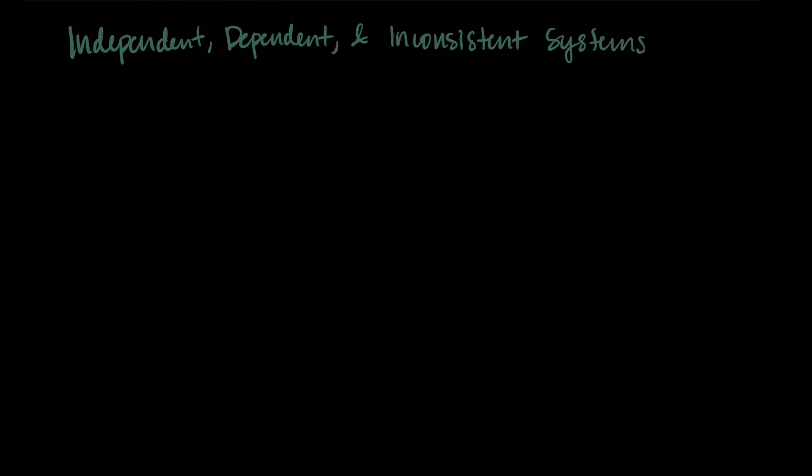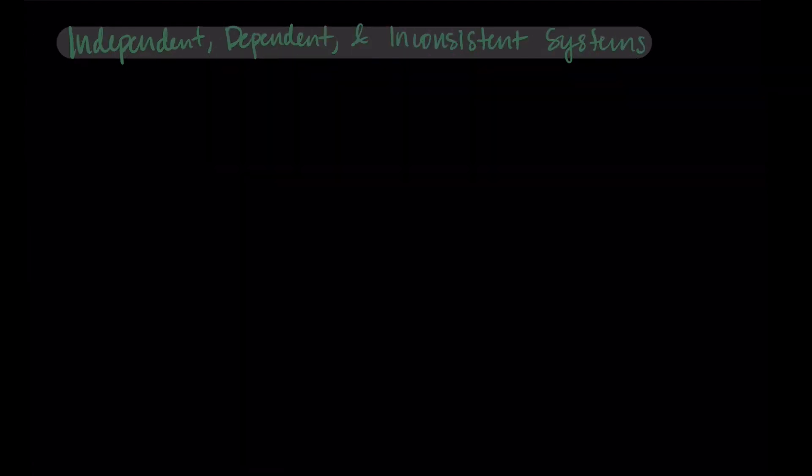So we talked about linear systems of equations, and we now have three types of classifications for them. So I'm just going to go through these one by one and talk about a little of what they look like.